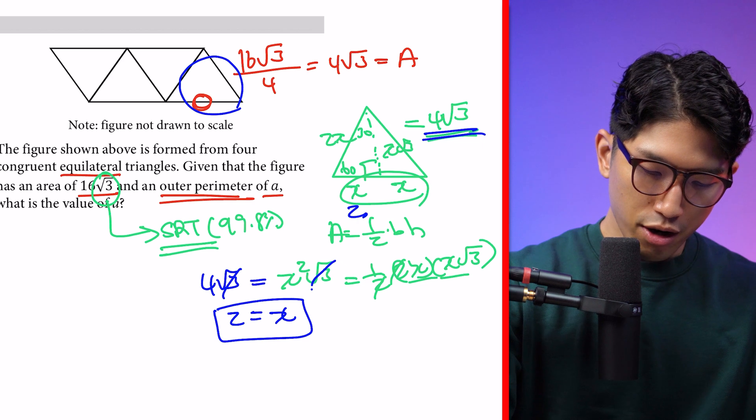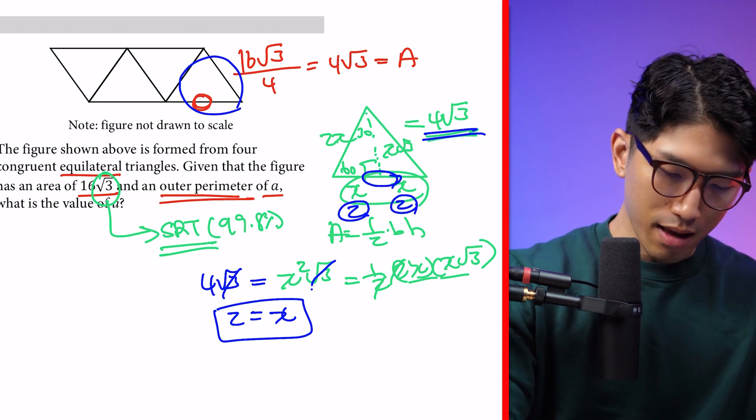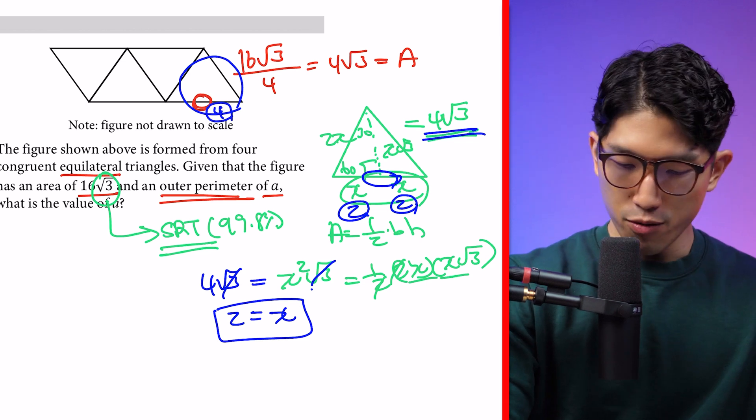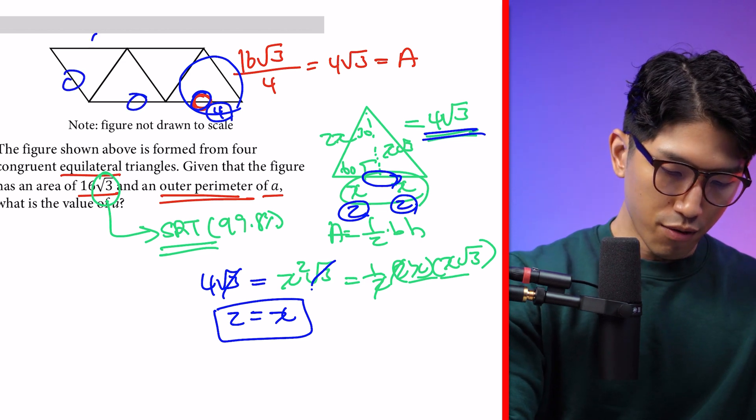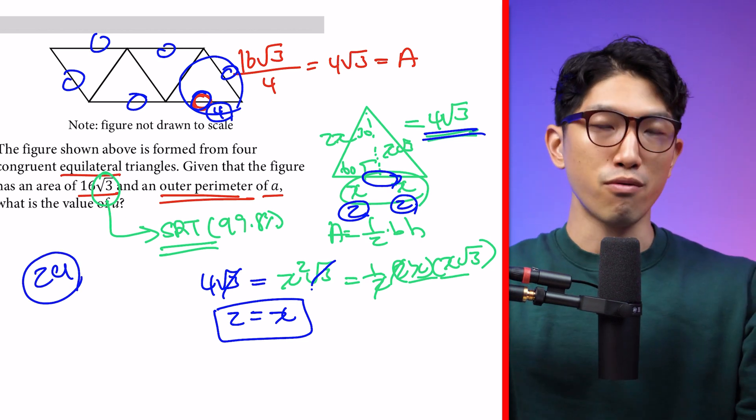If it's 2 here, that means it's also 2 there. That means a single side length has a length of 4. How many side lengths do we have? 1, 2, 3, 4, 5, 6. So 6 times 4 is 24, which is the outer perimeter of the shape.